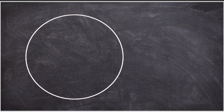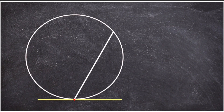Begin by drawing a tangent to the circle. The red dot is the exact point where the tangent touches the circle's edge. From that point, draw a chord across the circle. This does two things: it splits the circle into two segments and creates an angle between the chord and tangent.